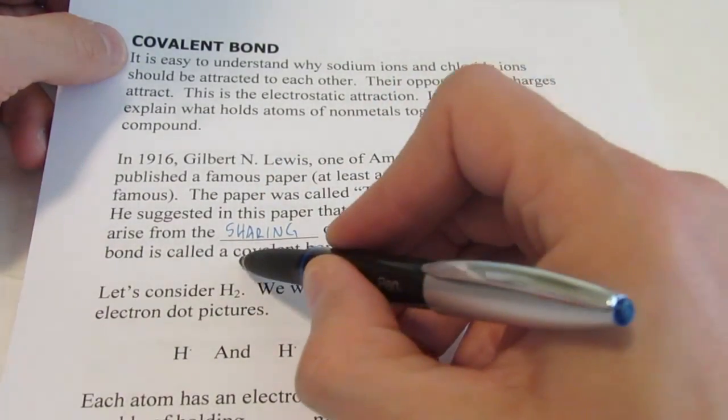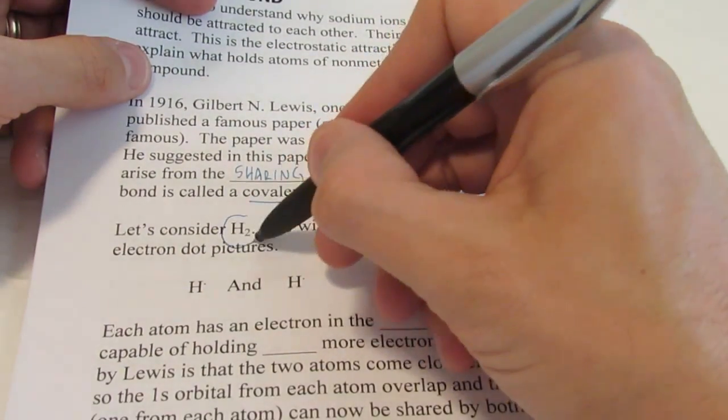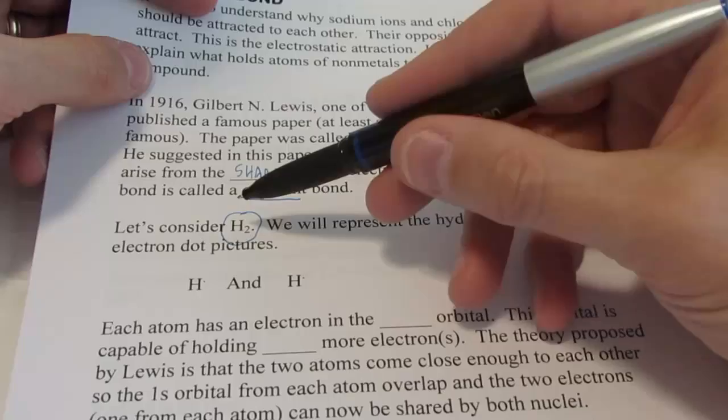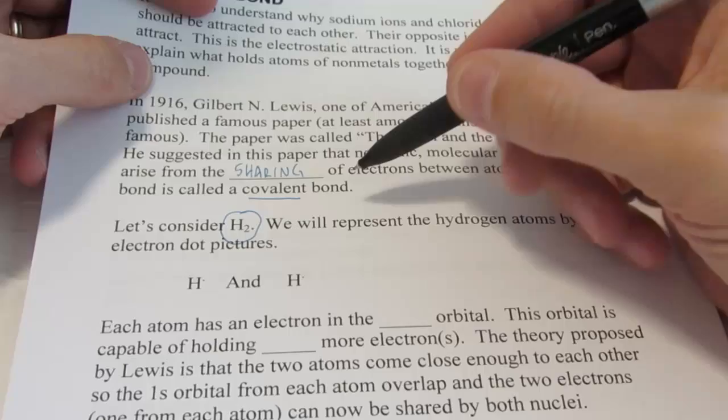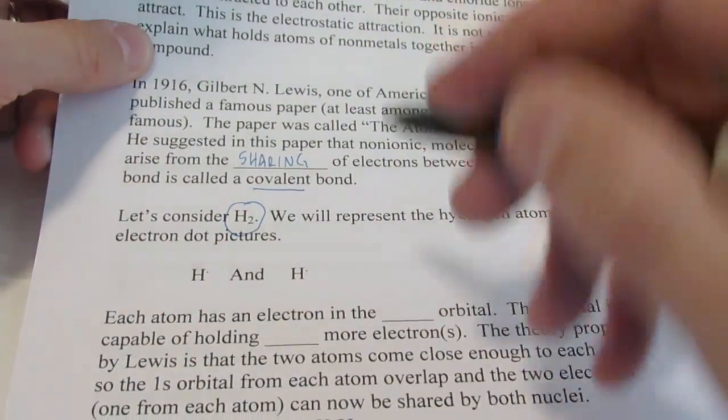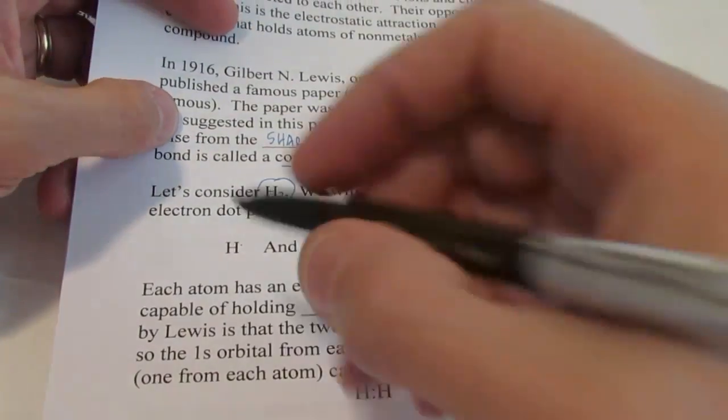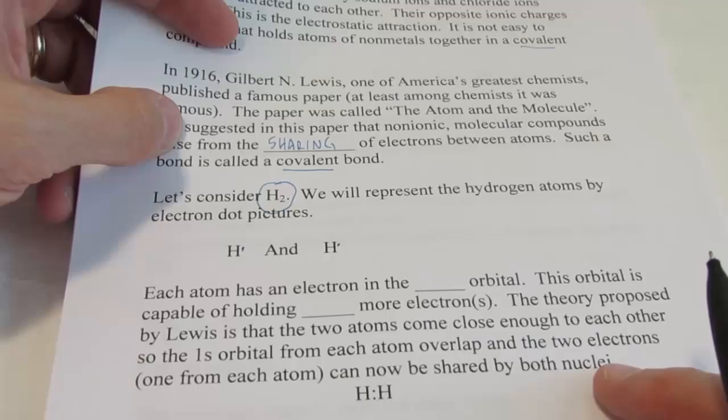He suggested in this paper that non-ionic molecular compounds arise from the sharing of electrons between atoms. Such a bond is called a covalent bond. Let's consider hydrogen gas. Its formula is H2. There are two hydrogen atoms attracted to each other, forming what we call a covalent bond.